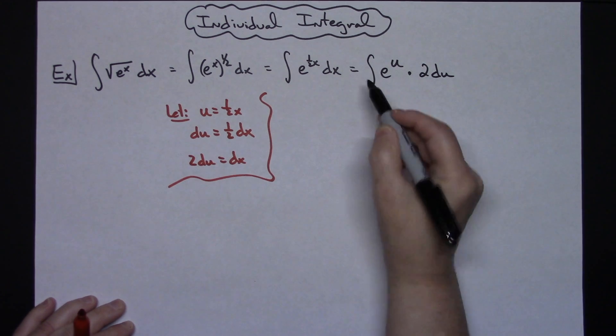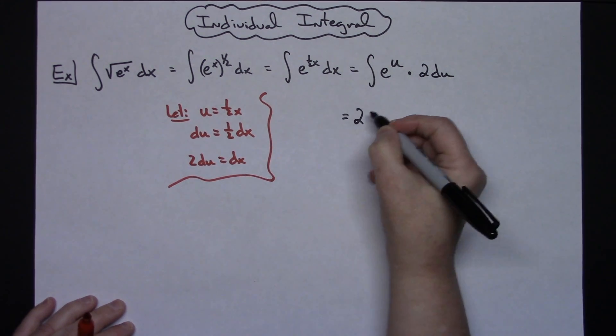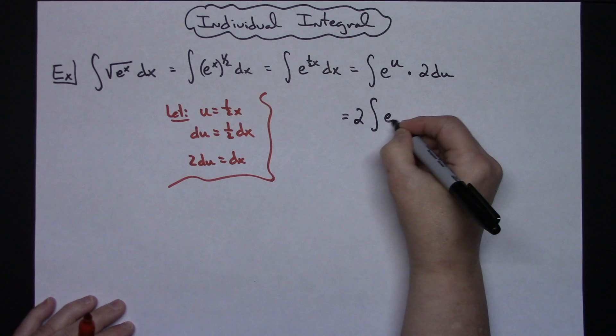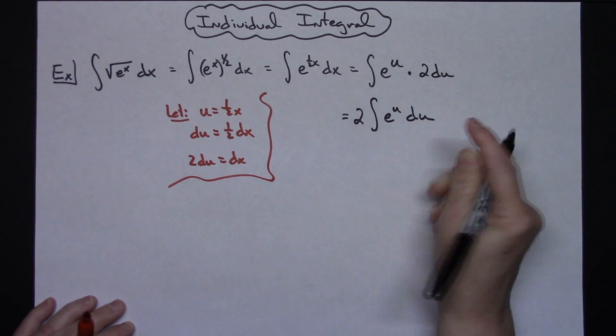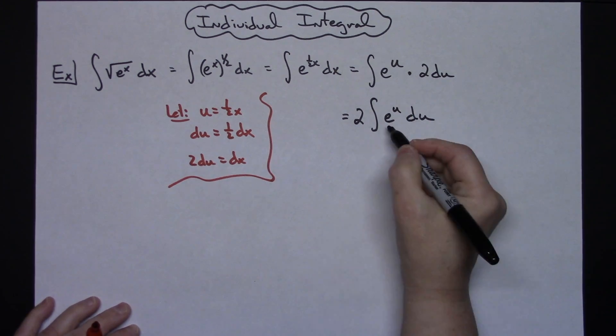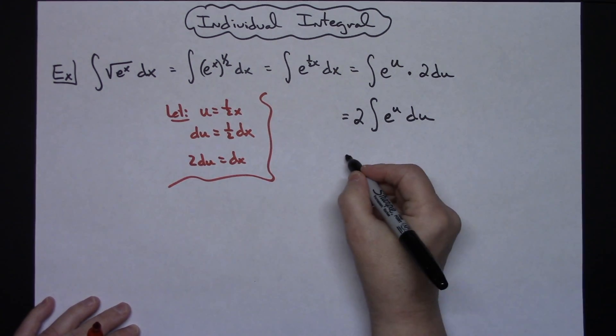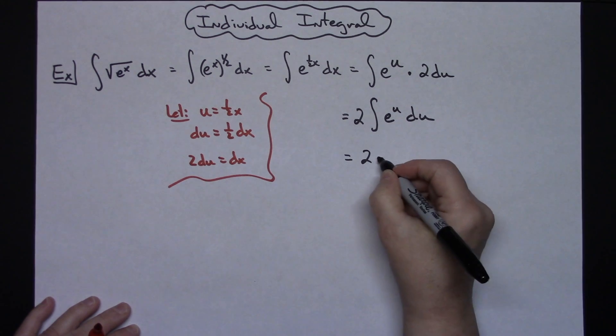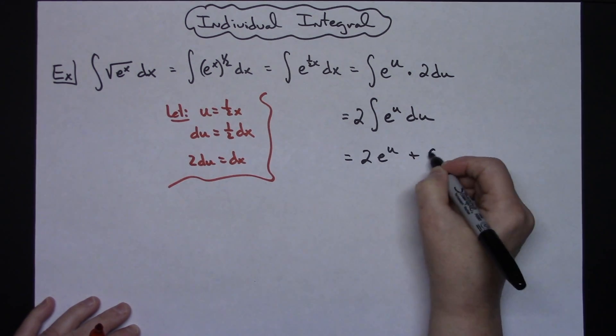I can now pull that 2 out in front. So 2 times the integral of e to the u du. And now we know how to integrate e to the u. e to the u integrated is just e to the u. So I'll have 2 e to the u plus c.